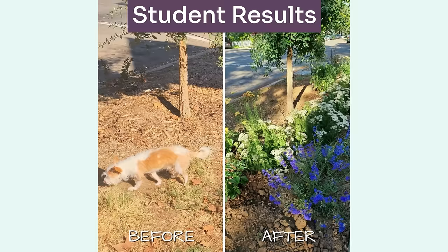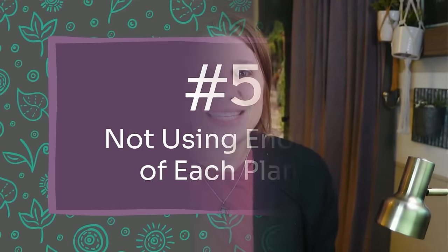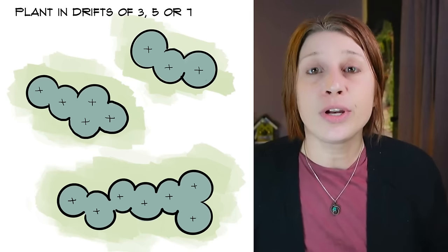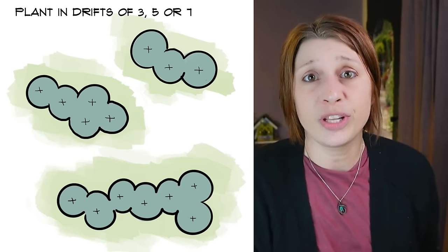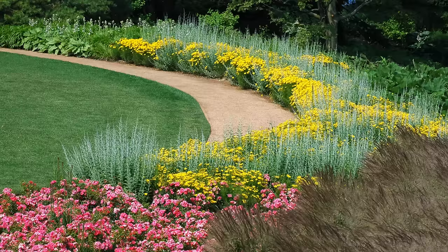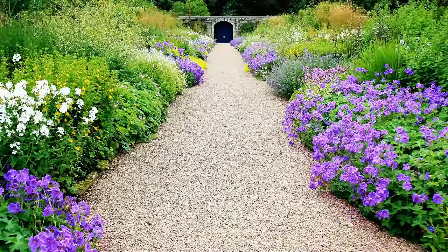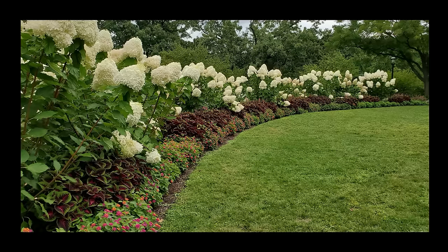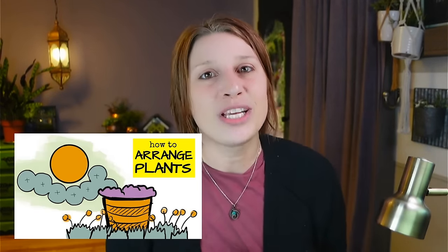The next mistake I see homeowners make is not using enough of each plant — not planting multiples. It's really fun to go to the garden center and pick lots of different plants, but I'd encourage you to choose multiples of each plant to create a larger impact. Landscapes are large and planting beds are typically viewed from a distance, so you need multiple plants to create the visual impact you're looking for with color. No more 'onesie twosies' — try to grab a lot of the same plant.